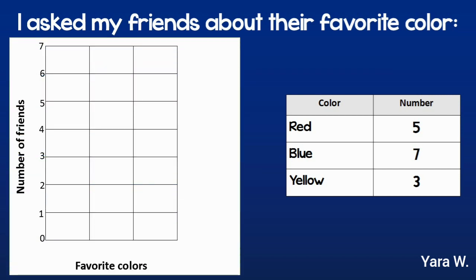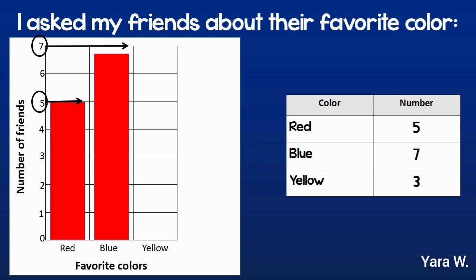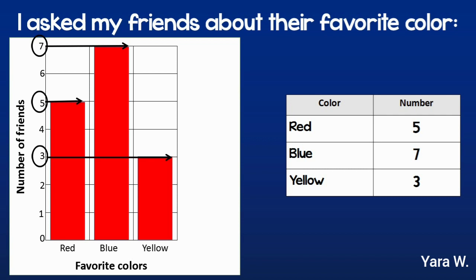Here's my empty bar graph. First I'm going to label red, blue, and yellow. Now I have five people who like red, so I would extend the line from the numbers to where I should draw the bar. Seven people like blue, so I will do the same and color until I reach number seven. Three people like yellow, so I will extend the line from number three and color until three.